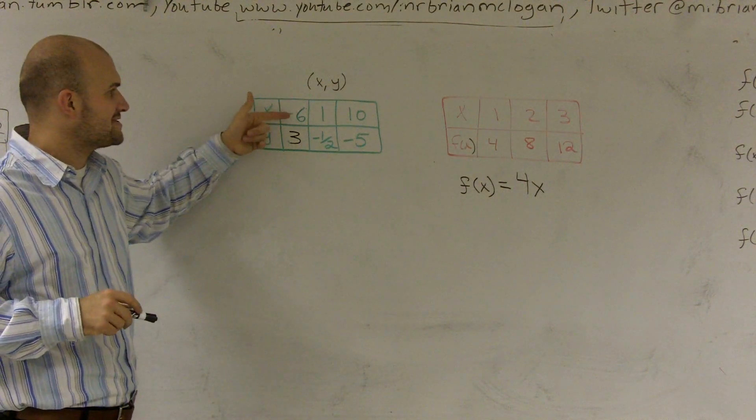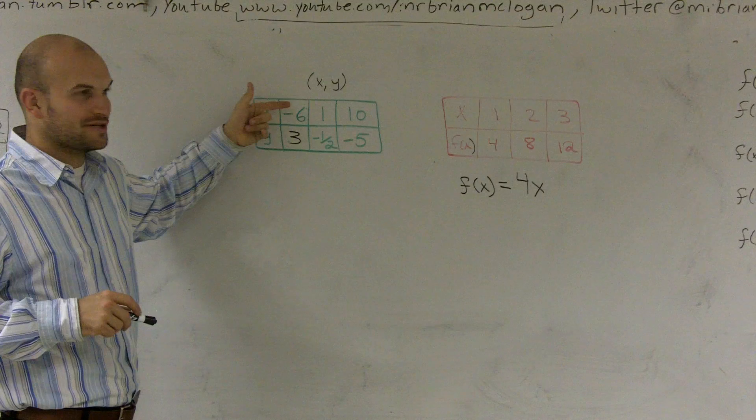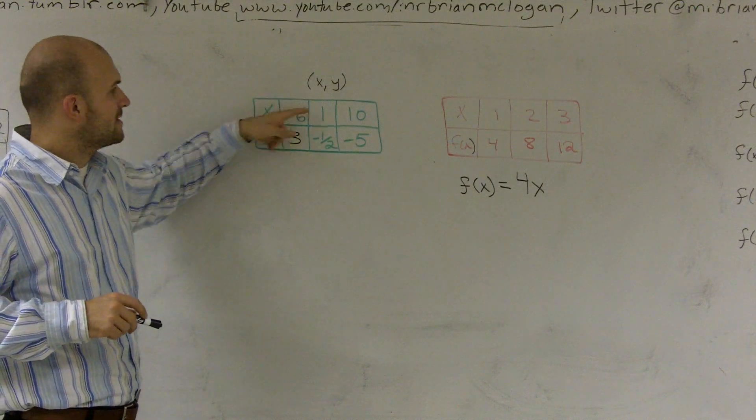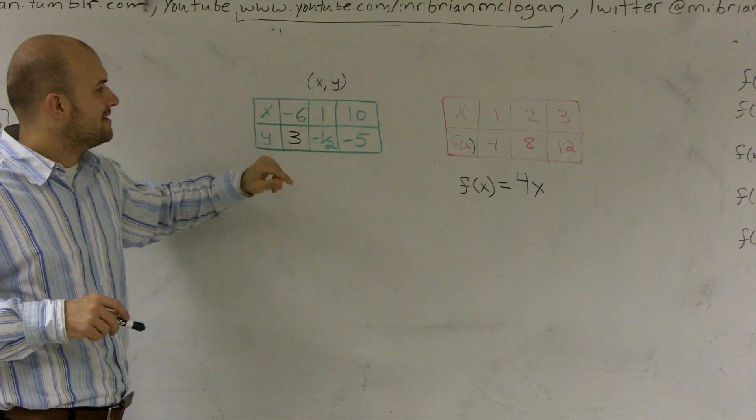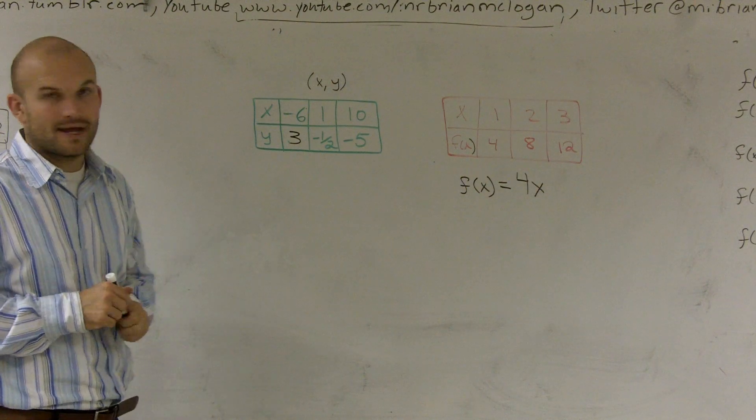So negative 6 divided by 2, divided by negative 2, will give me a positive 3. And 1 divided by a negative 2 gives me a negative 1 half.